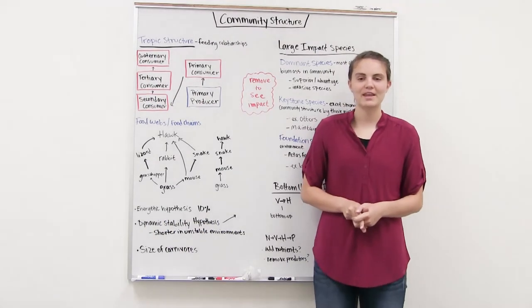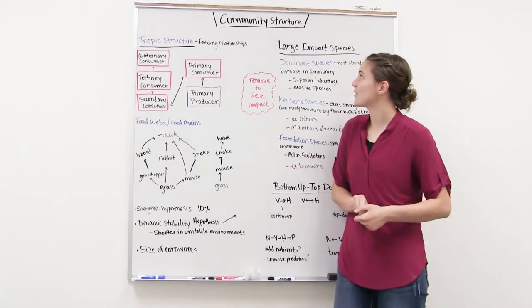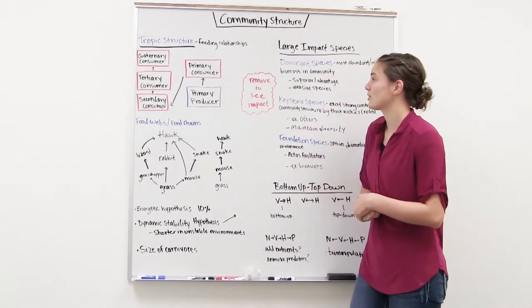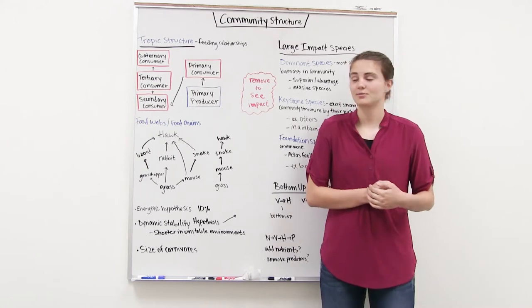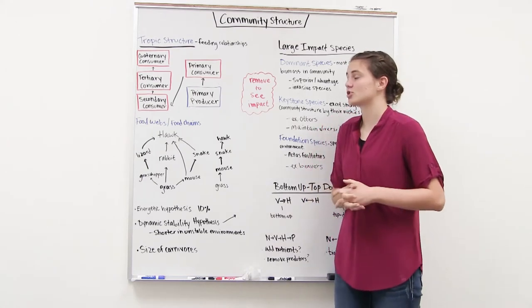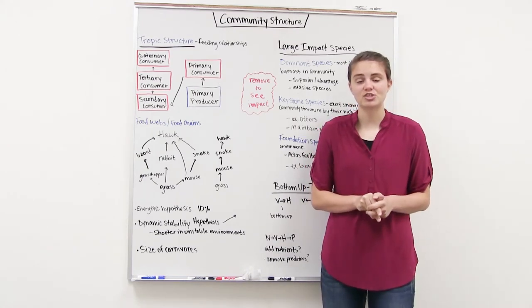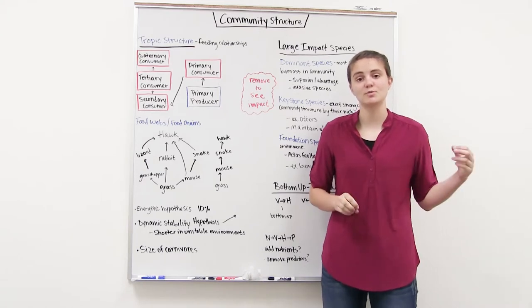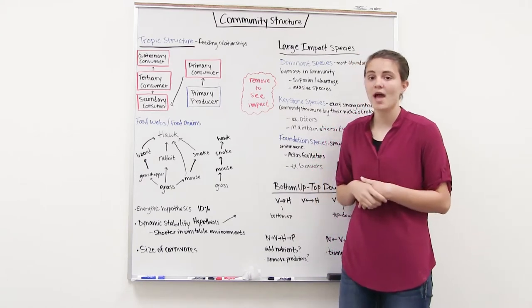Hi, welcome to the Bio 181 Tutoring Center videos. Today we're going to be talking about community structure. We're going to start off by talking about trophic structure, which is the feeding relationships among communities — which species in the community is eating who.